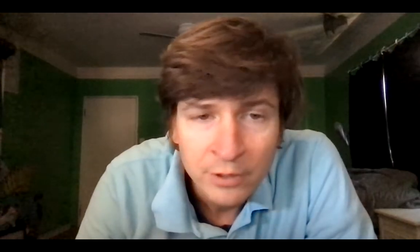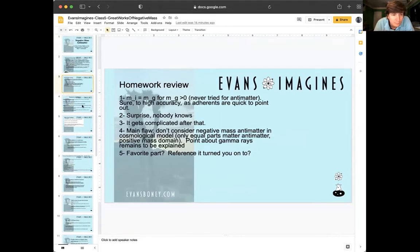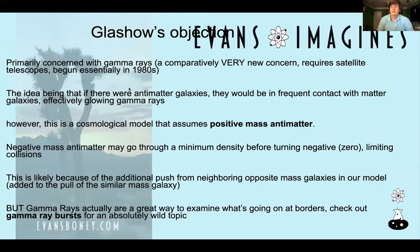Now we'll go to today's lecture: Great Works. We've talked about a few of them. We'll start here for today, going over Glashow's objection in a little more detail. These are great works of negative mass antimatter — we've got like ten of them. Glashow's objection is primarily concerned with gamma rays. Comparatively, it's a very new concern — requires satellite telescopes, so you could only start doing that when you got satellites with telescopes on them, in the eighties.